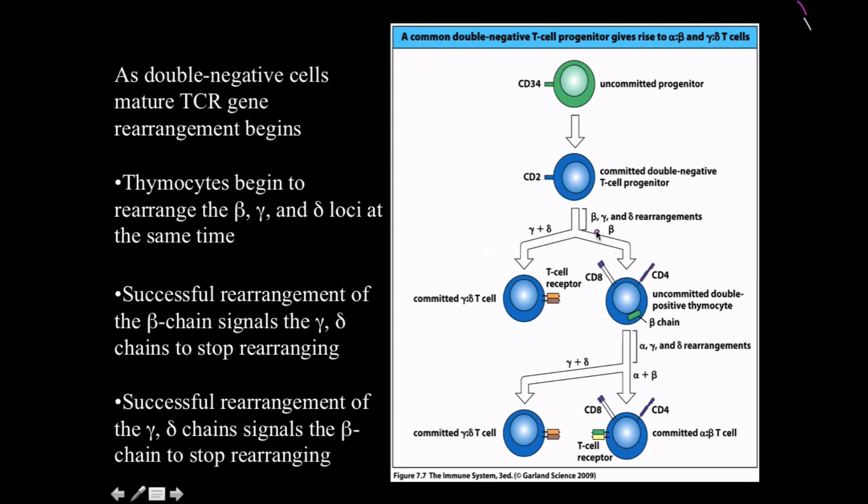Nine times out of ten the beta chain is going to win because the beta chain is just one, whereas delta-gamma is two. But if by the grace of God delta-gamma does win, then we have ourselves a delta-gamma T cell that's going to develop all the way and ultimately leave, and there's no selective processes for that. But if the beta chain wins, which is more likely to happen, it ends up becoming a double positive thymocyte. And then nine times out of ten the alpha chain rearrangement is going to happen.